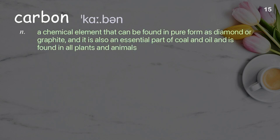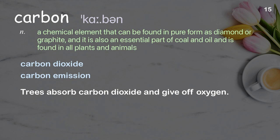Carbon: A chemical element that can be found in pure form as diamond or graphite, and is also an essential part of coal and oil and is found in all plants and animals. Examples: carbon dioxide, carbon emission. Trees absorb carbon dioxide and give off oxygen.